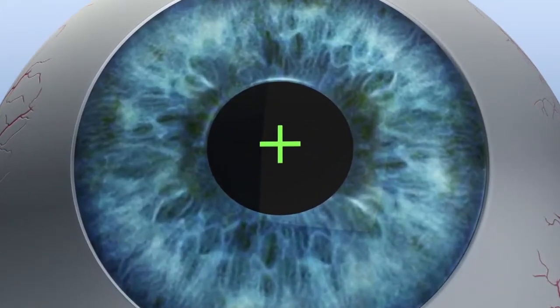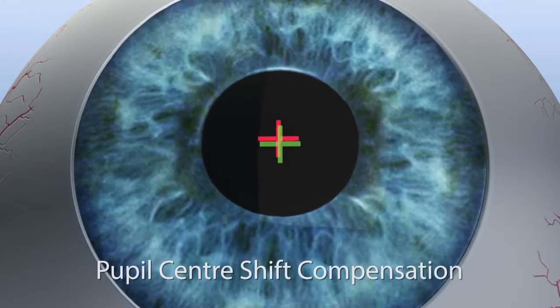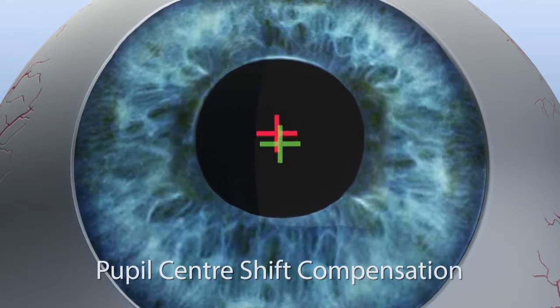Simultaneously with pupil detection, the eye tracker also detects the limbus and compensates for the pupil shift under different light conditions.